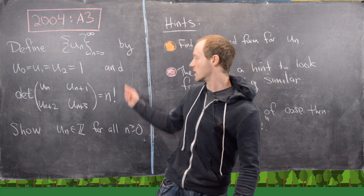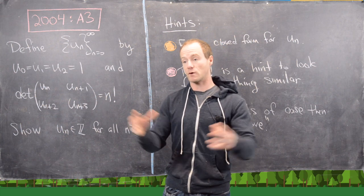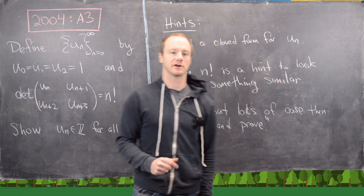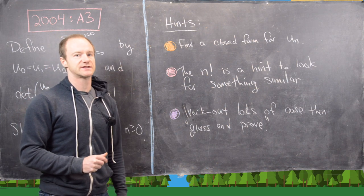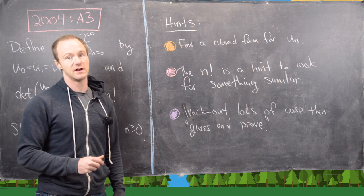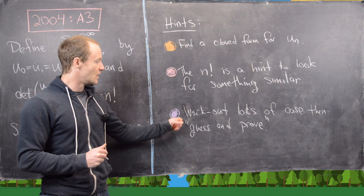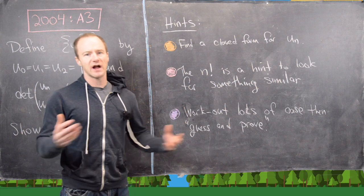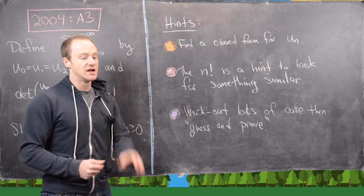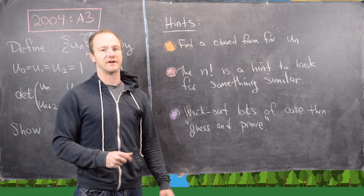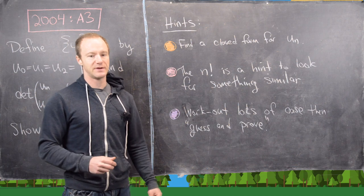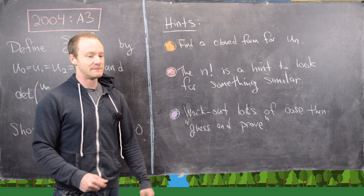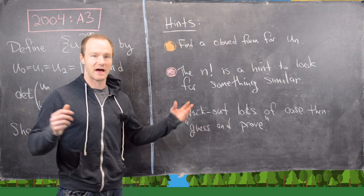Anytime you've got a factorial in a problem — which is repeated multiplication with the numbers going up or down — maybe your solution has something similar. Then finally, and this is one that a lot of students don't like very much — and honestly I didn't like this method for a long time, it took me a long time to get my head wrapped around it — the real method here is: work out lots of cases and then guess and prove. We're not just working out cases and calling it done; we're working out cases, guessing the structure of u_n, and then carefully proving it. When I was writing my PhD thesis, my advisor told me to do a certain part just by guessing and proving, and I was resistant, but it turns out that is real math, and a lot of really important research math is done that way.